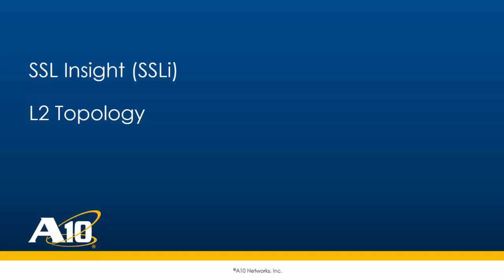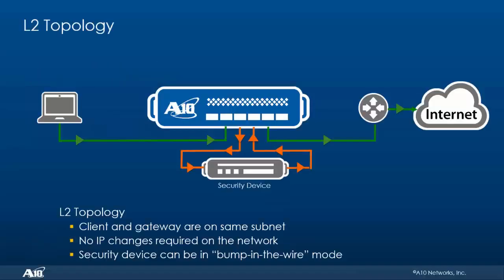Hello everyone, and welcome. In this video we are going to look at how the L2 topology works and how we can configure it using an SSLI device. In our lab setup, this is the basic L2 topology: we have a network with a client machine on one side, connected to an A10 device. The A10 device is in turn connected to a security device, and the A10 is also connected to the gateway router.